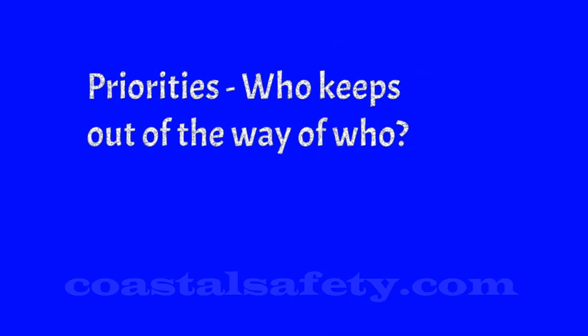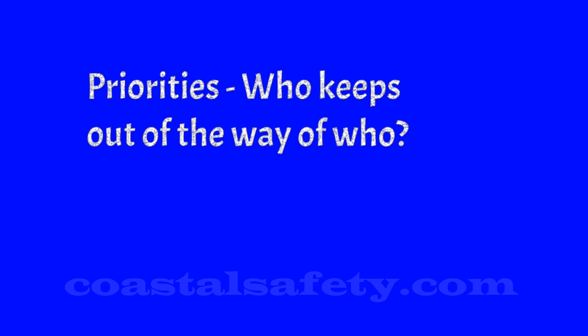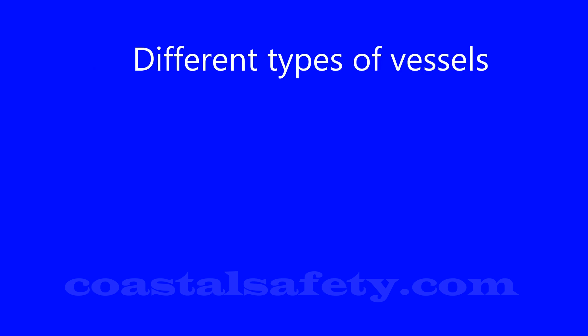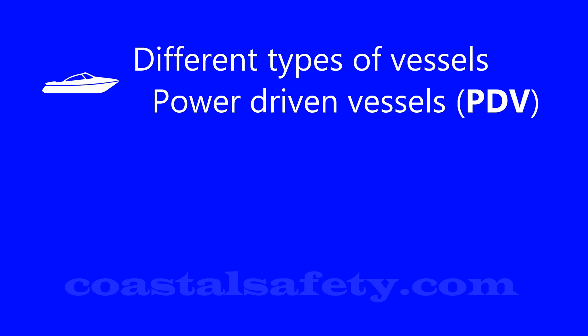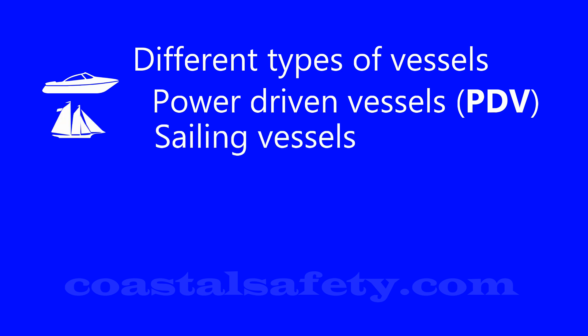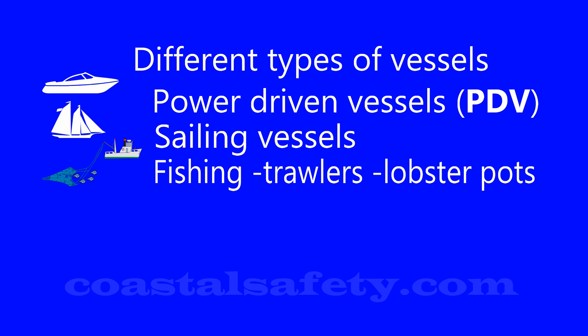Let's look at the priorities — who keeps out of the way of whom — out at sea in open waters. We abbreviate power-driven vessel to PDV. A sailing vessel is only a sailing vessel if it is not being propelled by machinery; if they switch their engine on and use it, they're considered to be a power-driven vessel.